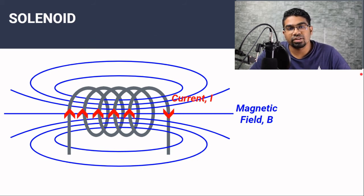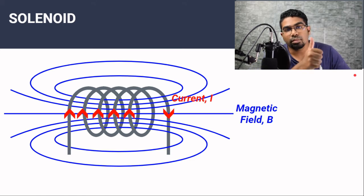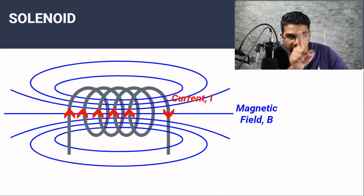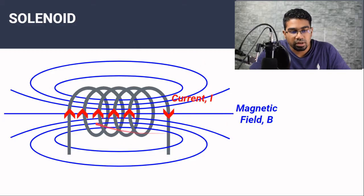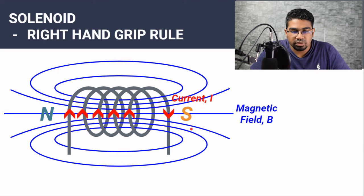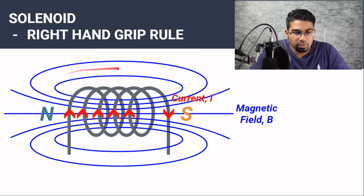To find the direction of the magnetic field, we use the right-hand grip rule, but this time it is slightly modified. Instead of the thumb being the current — because the current flows in loops — it is the four fingers that follow the direction of the current. The thumb will represent the north pole of the magnet. In this orientation, when current is flowing this way, the north is here and the south is here. Magnetic field lines are drawn from north to south, so the arrow goes from north, going out, and into the south.